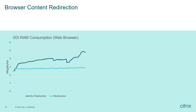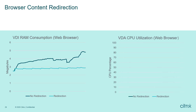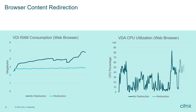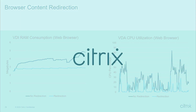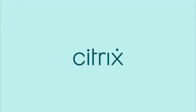Expensive, non-business-oriented websites, like YouTube, can be redirected, helping to reduce the virtual desktop's RAM and CPU resource consumption. Only Citrix provides organizations with the granular controls to balance user experience with cloud hosting costs.